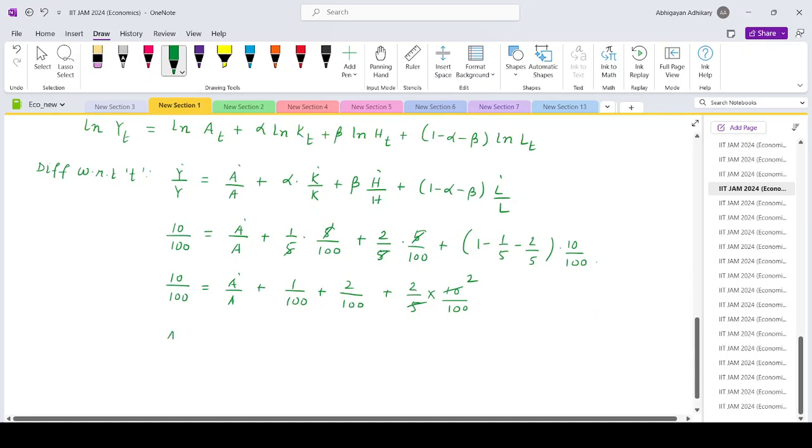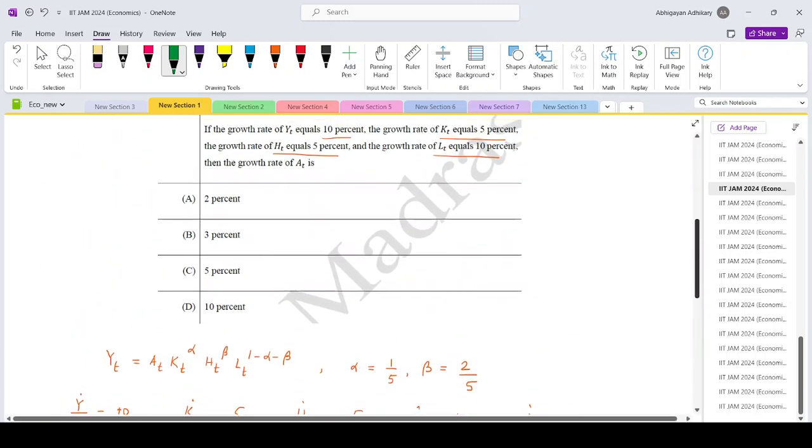So that means if you take everything on the left side, you have 1, 2, 4, so that's 7. So a dot by a is 3 by 100, that is 3%.